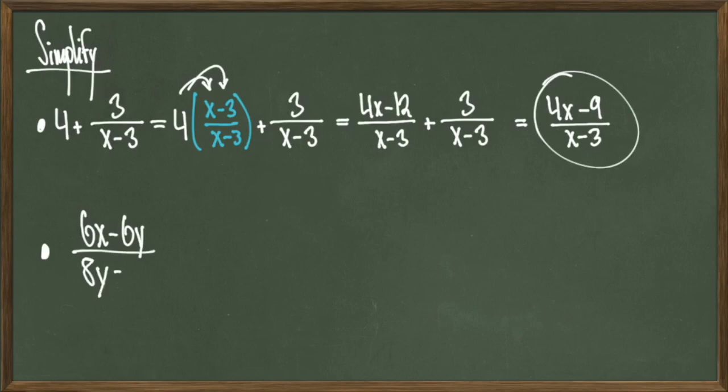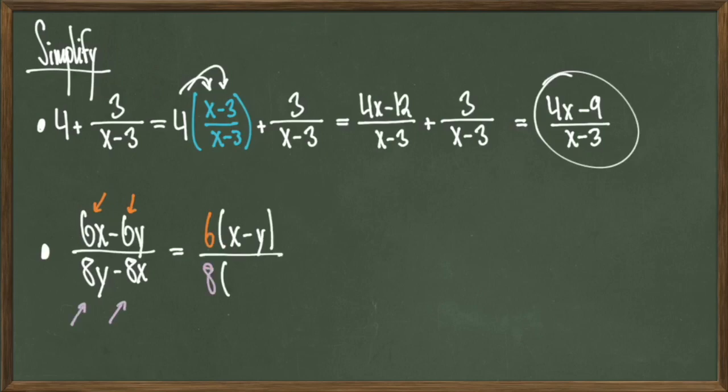For our next example, let's look at the expression 6x minus 6y over 8y minus 8x. I've got common terms in the numerator and the denominator, namely 6 and 8, so I can factor both of those terms out to get the revised expression 6 times the quantity x minus y over 8 times the quantity y minus x. Since I have x minus y and y minus x, I can't cancel these out just yet.